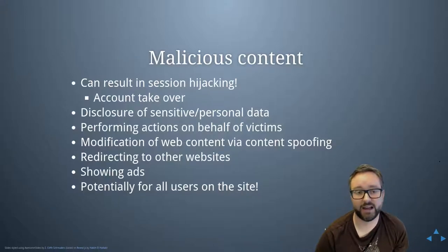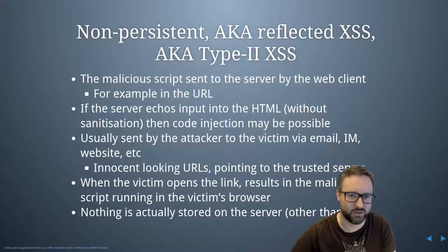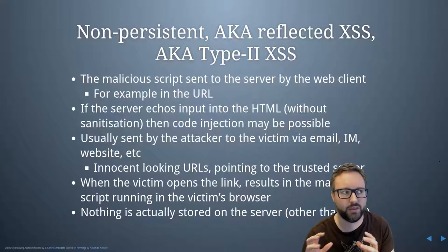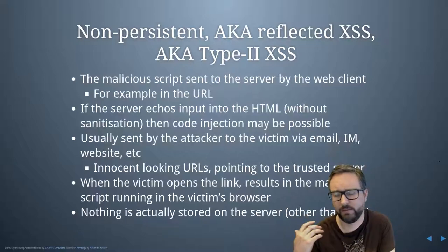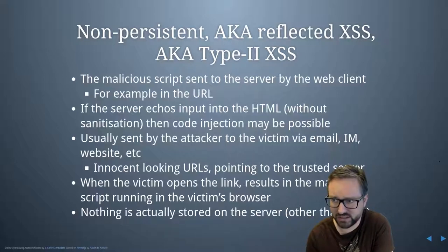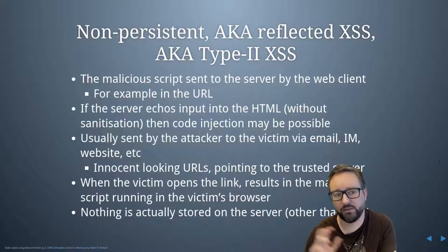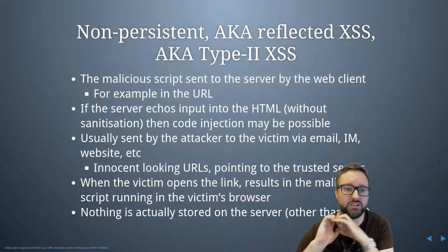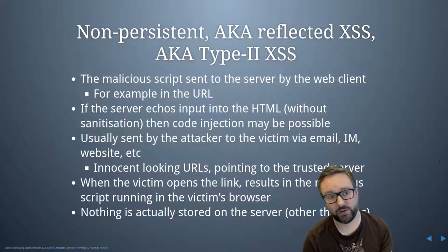Depending on the kind of cross-site scripting vulnerability, it could apply to all users that visit that website. There are three kinds of cross-site scripting vulnerabilities — three basically different ways an attacker can get malicious code into someone's web browser — and it depends on the kinds of programming mistakes made by the developers. One kind is non-persistent, also known as reflected cross-site scripting or type 2. This is where nothing is stored on the servers, but there is a way for an attacker to get the victim to send along a request that includes the script.